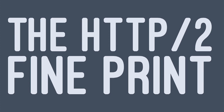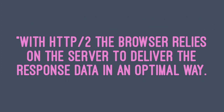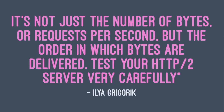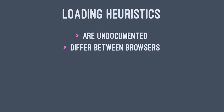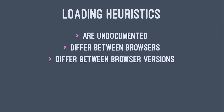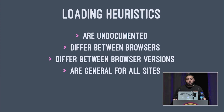So there is some fine print with HTTP 2 that not many people are talking about. Ilya Grigorik of the Chrome team said this well: with HTTP 2, the browser relies on the server to deliver responses in an optimal way. It's not just the number of bytes or requests per second, but the order in which the bytes are delivered — you need to test your implementation carefully. These loading heuristics are undocumented on purpose: browser vendors can choose what heuristics work better for their customers. They differ between versions — a change in a heuristic can improve certain sites but significantly affect others. And they have to be general for all sites, so what is good for a site with a big hero image may not be good for a single-page app.